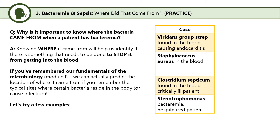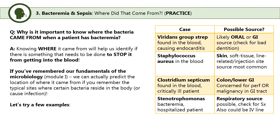Bacteria usually cause infection from a source relative to where they normally live as commensals. For example: viridans group streptococcus bacteremia causing endocarditis likely originated from the oral or GI tract — look for bad dentition. Staphylococcus aureus bacteremia, being a normal skin commensal, suggests a bad skin infection or infected IV line. Clostridium septicum in the blood is a bad sign for a problem in the large intestine, as all clostridia are normal enteric anaerobic flora. Stenotrophomonas is a nosocomial pathogen — consider IV line infection but also respiratory symptoms, as it commonly causes pneumonia in patients with structural lung disease.